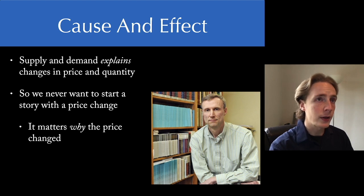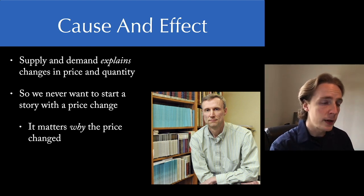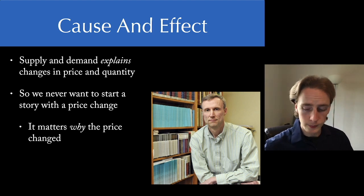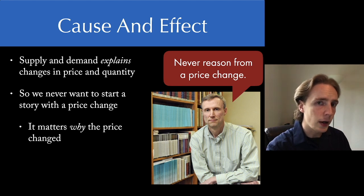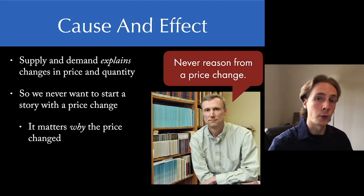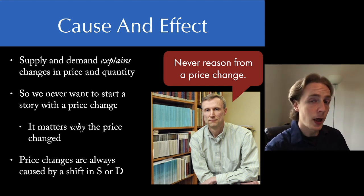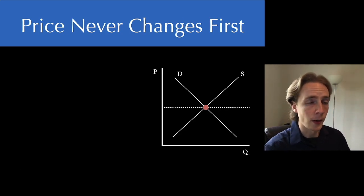Of course we can talk about the effect of price changes on other markets — that's what we've been doing with substitutes and complements. But if we're looking at one market, we can never start a story with a price change. Scott Sumner, who writes a popular macroeconomics blog, has a mantra: never reason from a price change. This means we can never start a story by saying the price changed and therefore X happens. Price changes do not cause supply or demand shifts — it's always the other way around. Supply and demand shift, therefore the price changes.